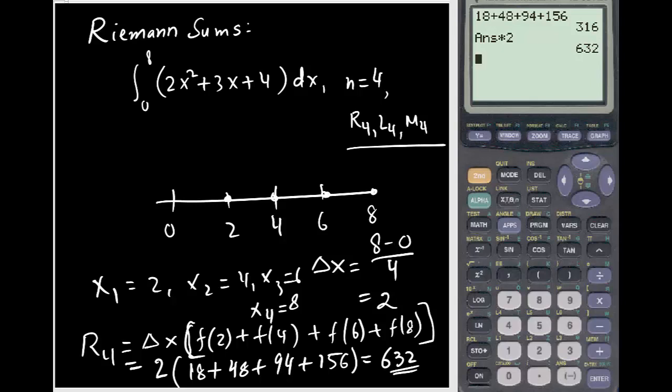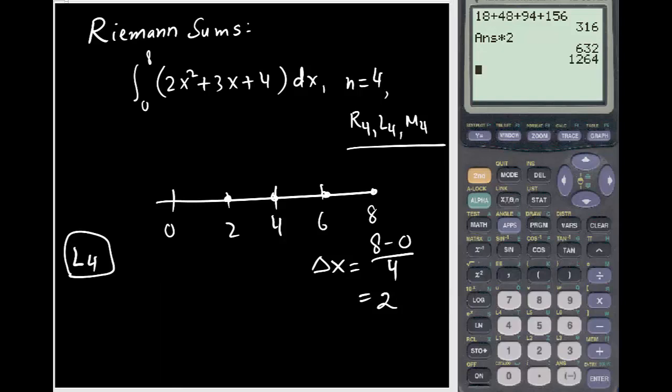Now we do for the left Riemann sum. We are looking for left Riemann sum approximation. The left boundary will be this one first, then this one, then this one, then this one, and we stop here. So we start from here: x naught is 0, x1 is 2, x2 is 4, and x3 is 6. You got 1, 2, 3, 4 boundary points.